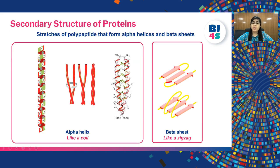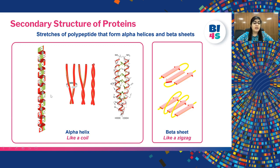The secondary structure of proteins constitutes stretches of polypeptide that either form alpha helices or beta sheets. Interestingly, the overall 3D folding pattern of each protein is unique, but these two folding patterns are commonly found within them. The alpha helix is shown as a helical ribbon, whereas the beta sheet is shown as a set of arrows.